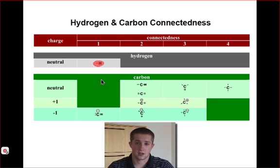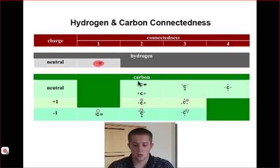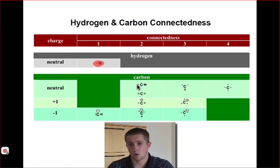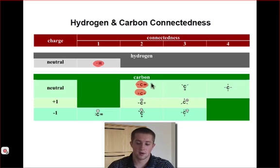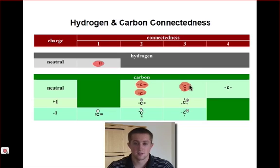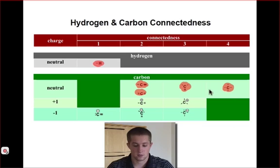Carbon, on the other hand, being a secondary element has many more possibilities. If we take, for example, a neutral carbon atom, we know that in order to remain neutral, a carbon must have four bonds associated with it. If it has a connectedness of two — connected to two other atoms — there are two possibilities that exist. A carbon atom with a connectedness of three will have one double bond and two single bonds; that's the only possibility for a neutral carbon with connectedness of three. A connectedness of four involves a carbon atom with four single bonds.